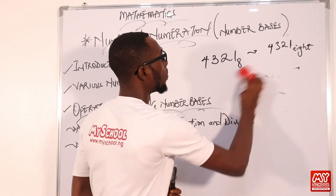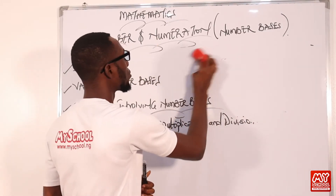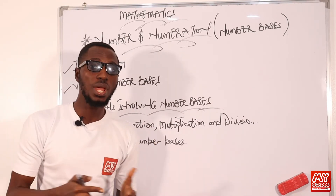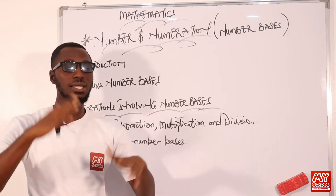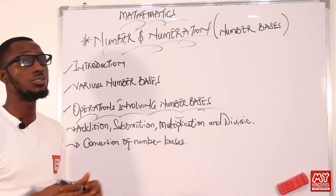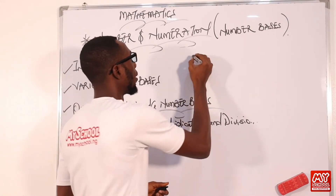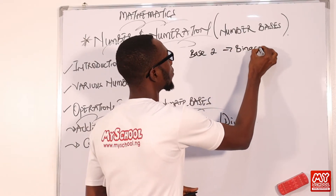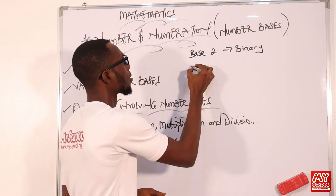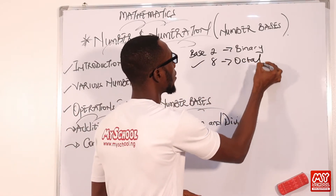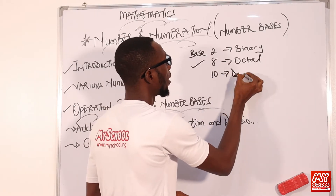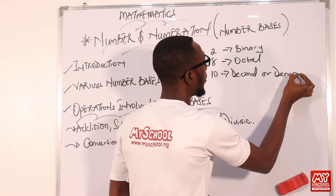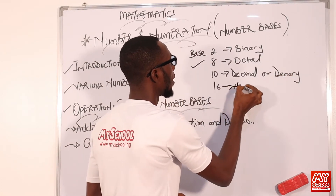Let's go into the various number bases. We have base 2, base 3, base 4, 5, 6, 7, 8, and so on. Base 2 is referred to as the binary system. Base 8 is your octal. Base 10 is your decimal, also called denary. Base 16 is your hexadecimal.